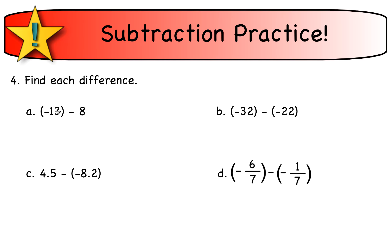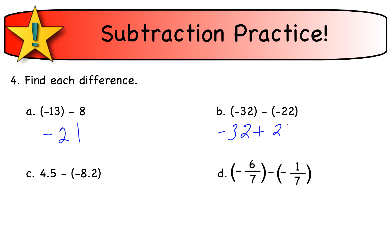Let's find the differences. Negative 13 minus 8 is the same as negative 13 plus negative 8. Same signs, add: 13 plus 8 is 21, keep the sign — negative 21. Negative 32 minus negative 22 is the same as negative 32 plus positive 22. Opposite signs, subtract: 32 minus 22 is 10, and 32 is bigger, so the answer is negative 10.